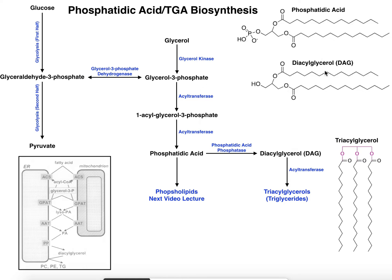Let's review the structures of these. This is a phospholipid — the simplest one being phosphatidic acid. Both phospholipids and triglycerides have a glycerol backbone, with three carbons each having an oxygen bound to it. In a phospholipid, two of those oxygens are esterified to fatty acyl chains, sometimes called the tails of the phospholipid, and there are always two of them.